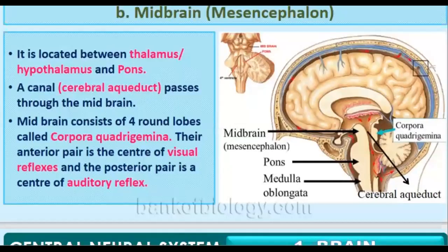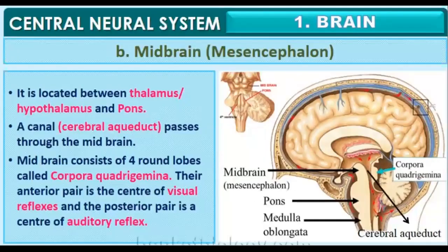Now we will talk about the midbrain, or mesencephalon. We have already covered the forebrain — its parts, the limbic lobe, the diencephalon, and the functions of the thalamus and hypothalamus. The midbrain is located between the thalamus, which is the anterior part of the brain, and the pons.